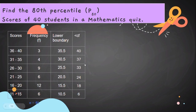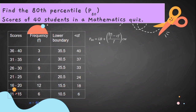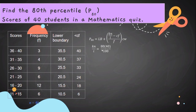Using the same table again, find the 80th percentile score of 40 students in a mathematics quiz. Our formula is P sub 80 equals LB plus open parenthesis KN over I minus CF over F close parenthesis CW. To find KN over I: K equals 80 because our percentile is 80, N is 40, and I equals 100 because we are looking for the percentile. So 80 times 40 over 100 equals 32.